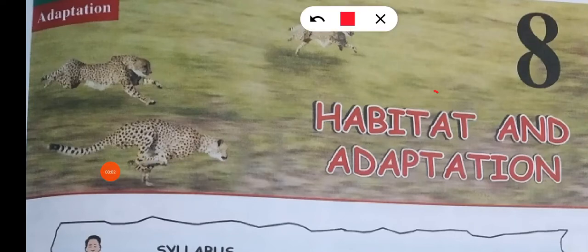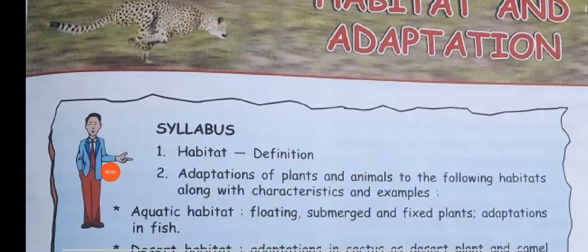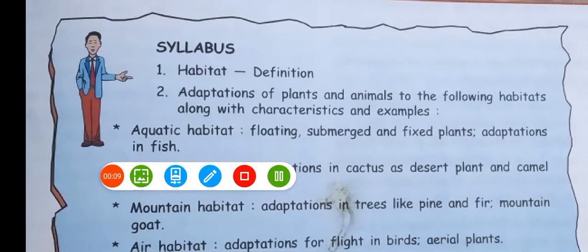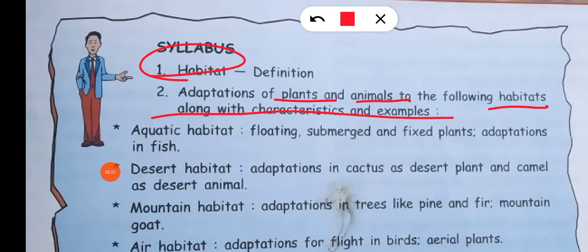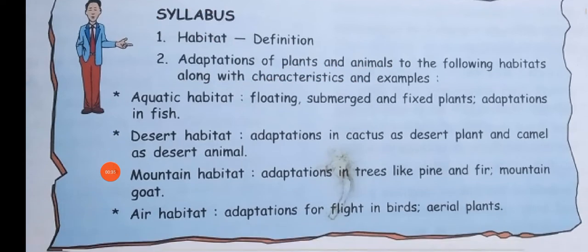Our students in this video will discuss Chapter 8: Habitat and Adaptation. A student in this video will learn about the Habitat definition, and the adaptation of plants and animals to the following habitats along with their characteristics and examples: Aquatic Habitat, Desert Habitat, Mountain Habitat, and Air Habitat.